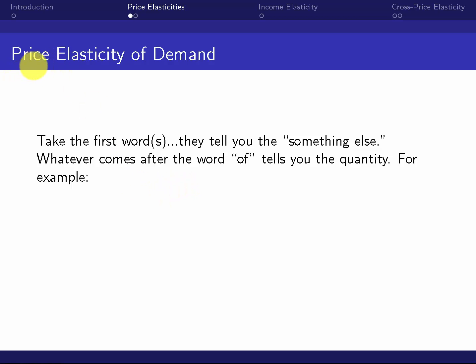So the first word, price, tells us the something else, and that's going to go on the bottom. Check out these color-coded things right here. And whatever comes after the word of tells us the quantity. So we need a quantity, and this says demand, so that's quantity demanded.